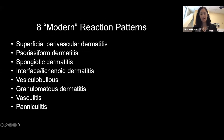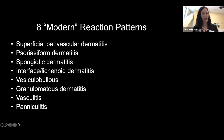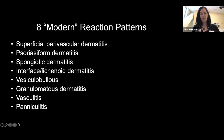The main categories I'm going to talk about are superficial perivascular — which I'll give you the caveat is the least satisfying category — psoriasiform, spongiotic, interface/lichenoid, vesiculobullous or blistering, granulomatous, vasculitis, and panniculitis.